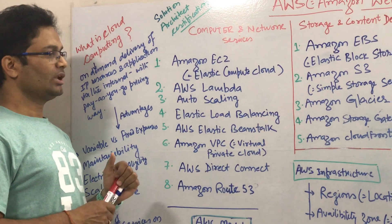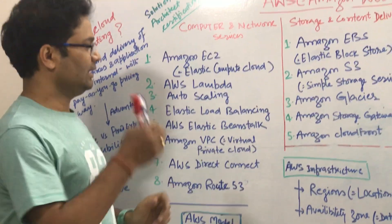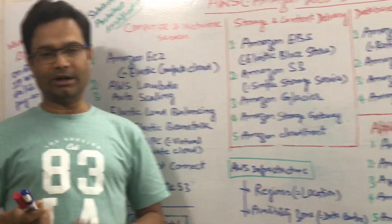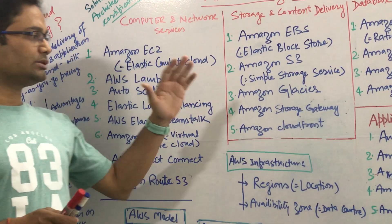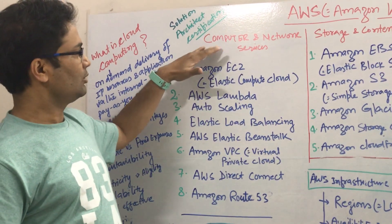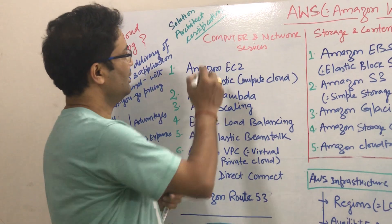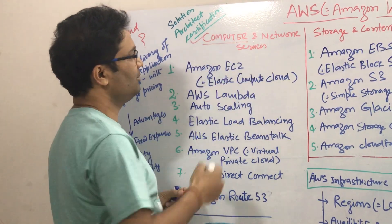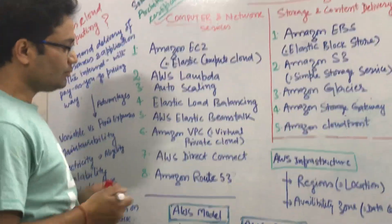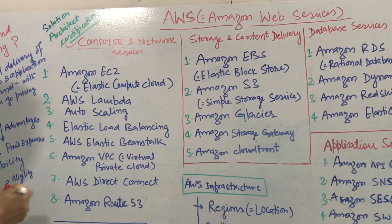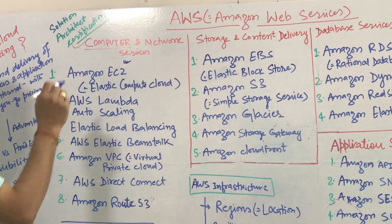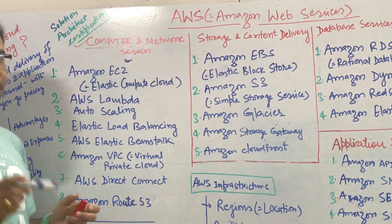Today's introduction class — I am going to explain how many types of services are provided by AWS. I have categorized those services so it might be easy for you. First I will talk about compute and network services — compute power. In the compute power, the first important thing is EC2, Elastic Compute Cloud, Amazon EC2. This is a very basic requirement.